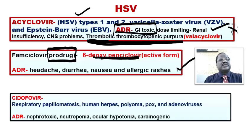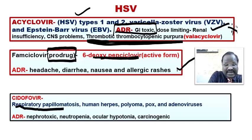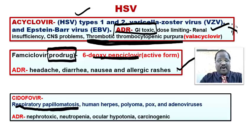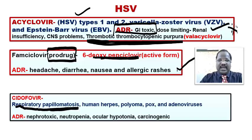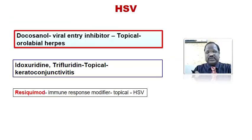Other than famciclovir, we have cidofovir, a drug useful mainly for cytomegalovirus infection, but also useful for herpes and for respiratory papillomatosis — that is an old important question. It is also used for pox virus and adenovirus. Cidofovir causes mainly nephrotoxicity, neutropenia, and sometimes ocular hypotonia and carcinogenicity.